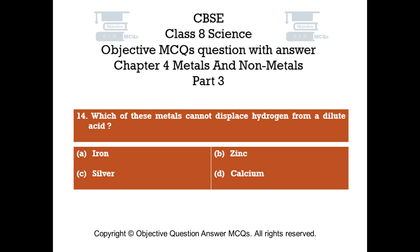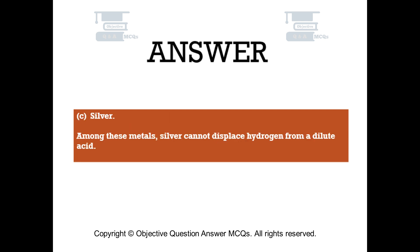Question number 14. Which of these metals cannot displace hydrogen from a dilute acid? Option A: iron. Option B: zinc. Option C: silver. Option D: calcium. The right answer is option C. Silver. Among these metals, silver cannot displace hydrogen from a dilute acid.